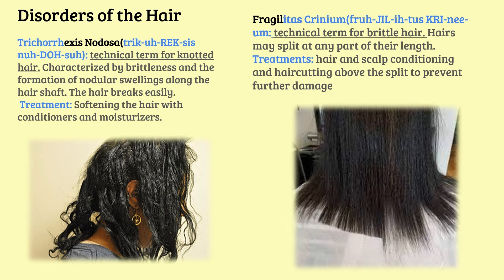Next, this disorder is trichorrhexis nodosa. Think of 'rhexis' meaning brittle breakage, and 'nodosa' meaning knotted hair. It is characterized by dryness and the formation of nodules or swellings along the hair shaft. The hair breaks very easily. Your treatment is to soften the hair with conditioners and moisturizers. Think of excess nodules meaning knotted brittle hair.